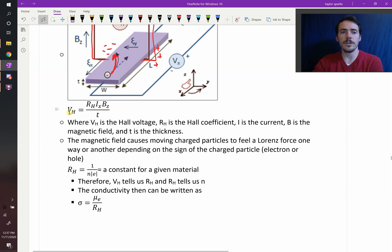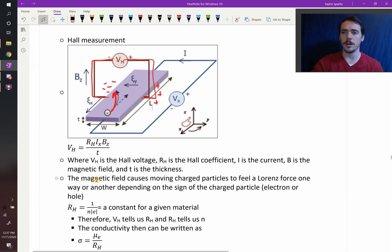What's cool is that we know that RH, the Hall coefficient, is equal to 1 divided by the number of carriers times their charge. So this is pretty great because in this relatively straightforward setup, we can measure the Hall voltage.